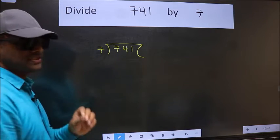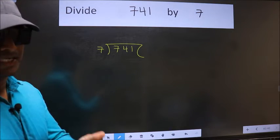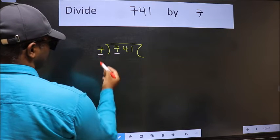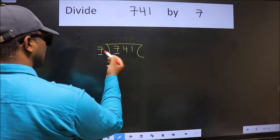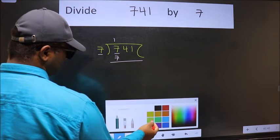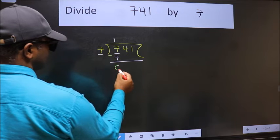This is your step 1. Next, here we have 7 and 7 here. When do we get 7 in 7 table? 7 once, 7. Now we should subtract. We get 0.